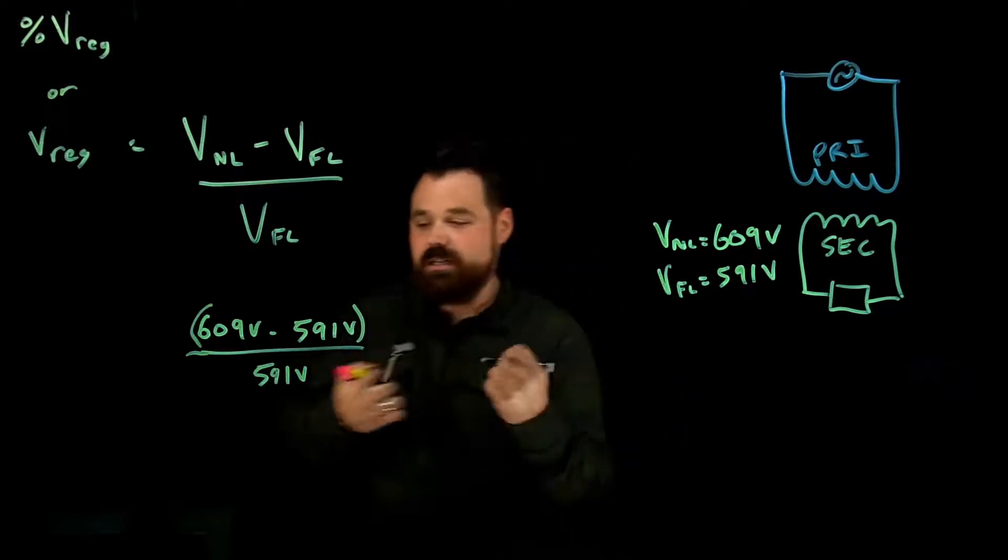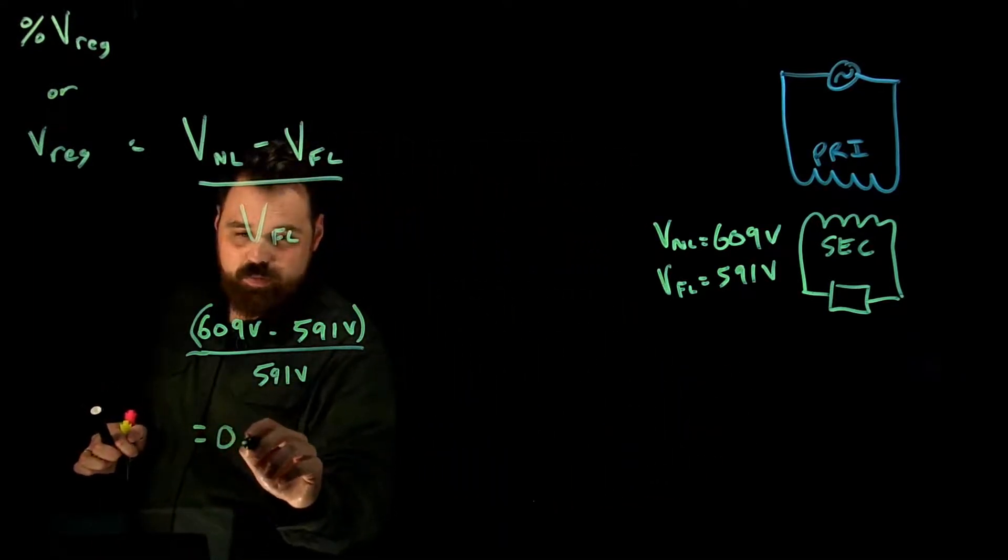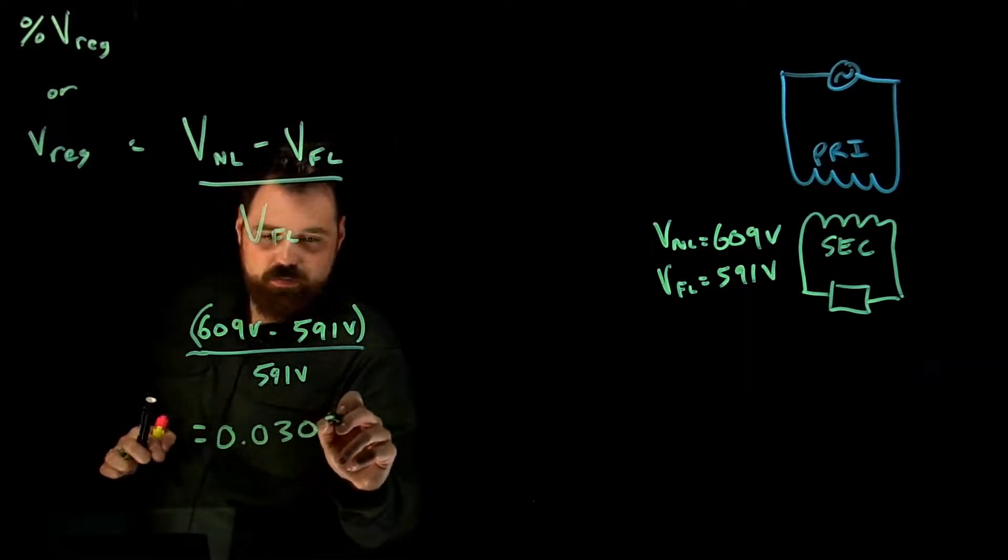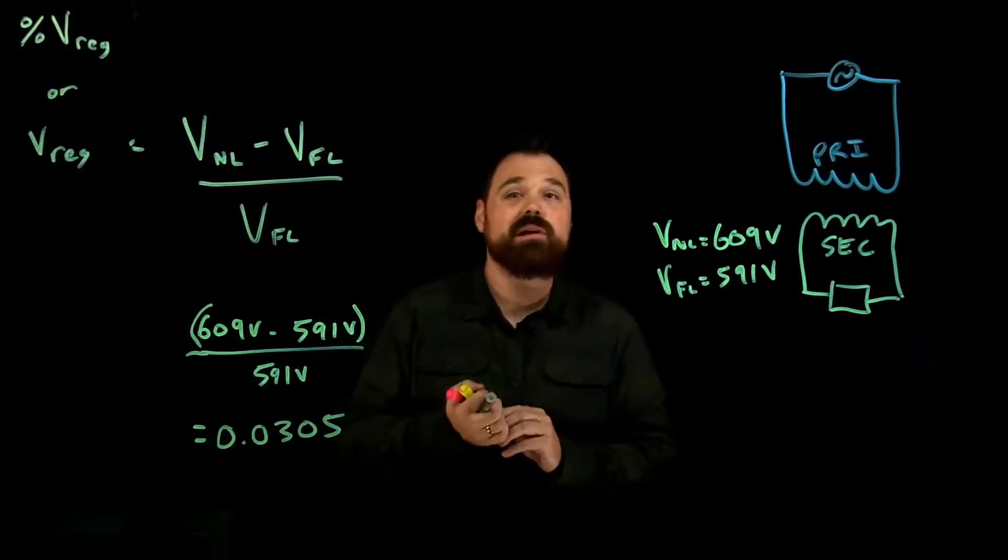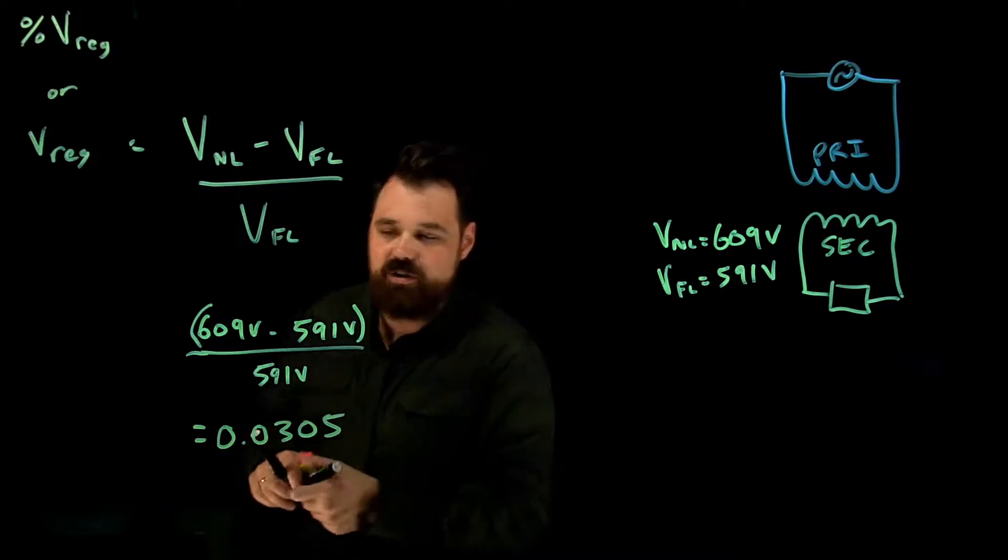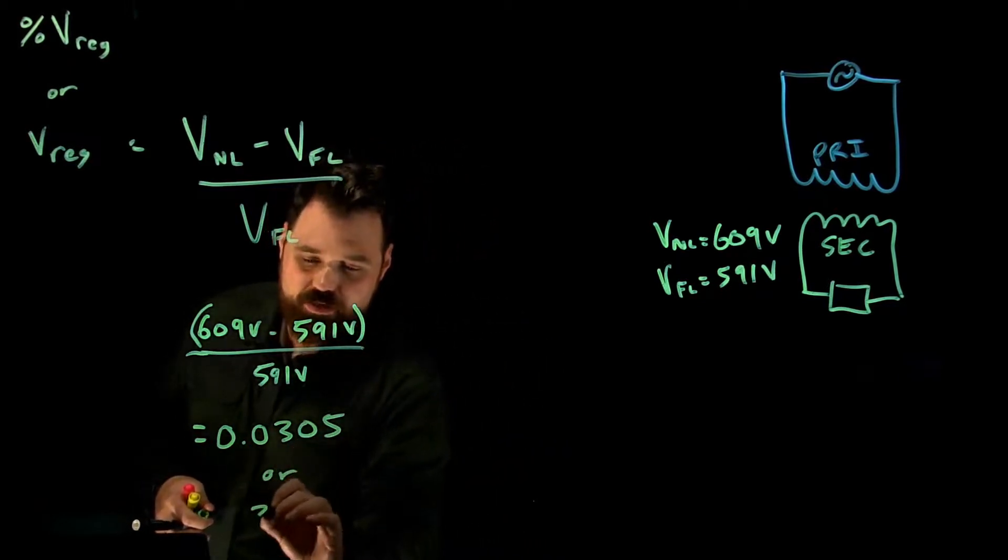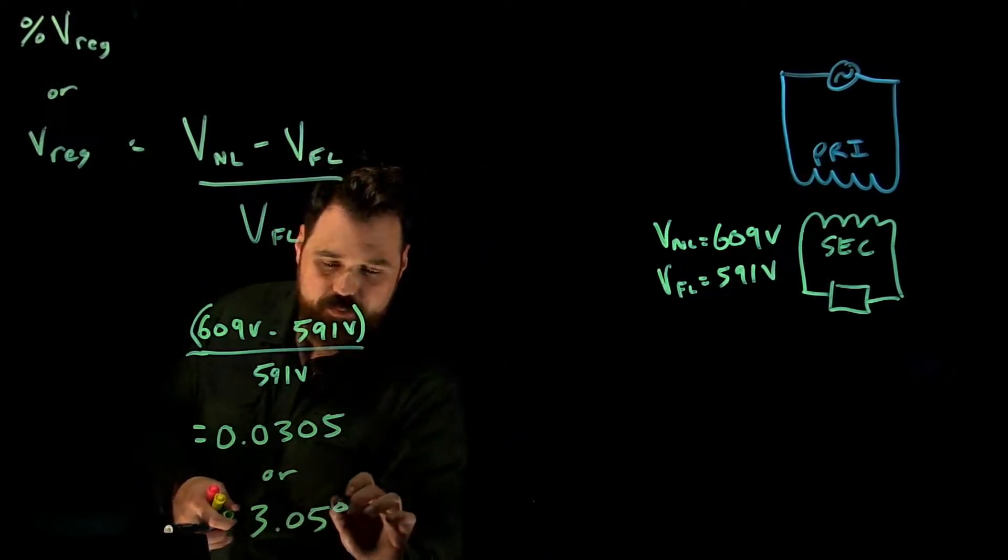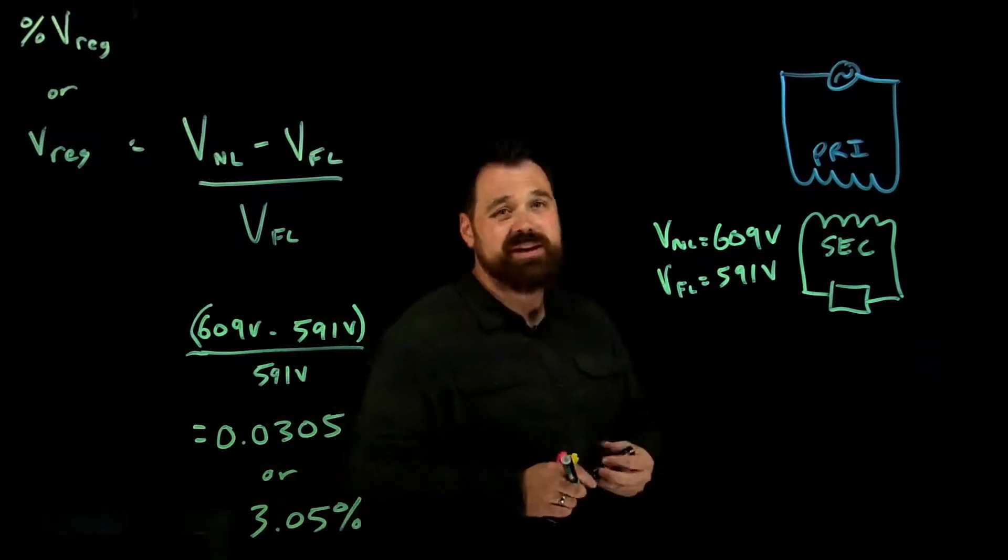In this case, that would give us 0.0305. Which if we are looking for percentage, then we would multiply it by 100, which would give us that 3.05 percent voltage regulation.